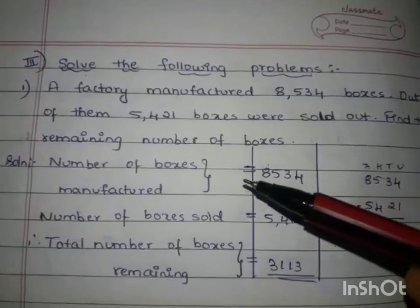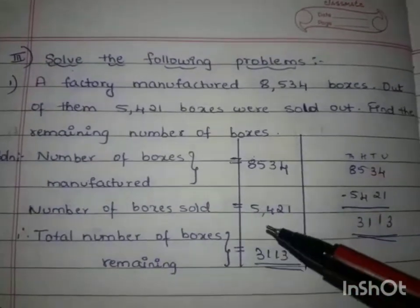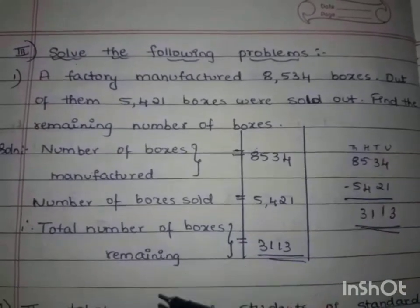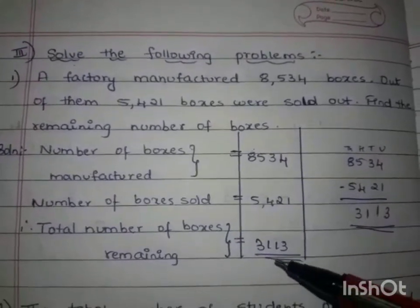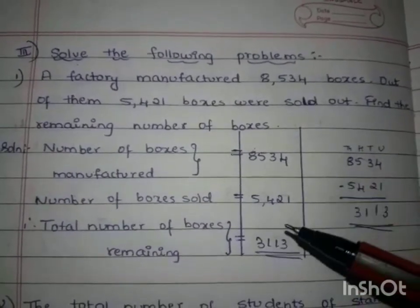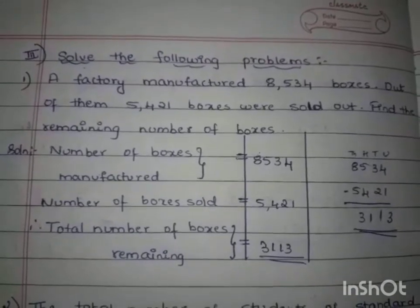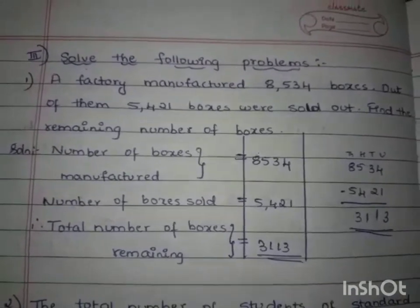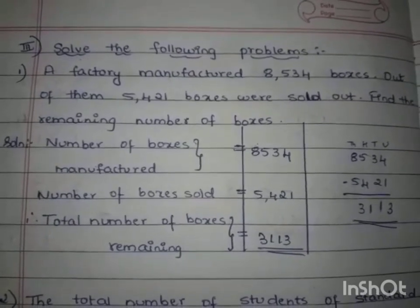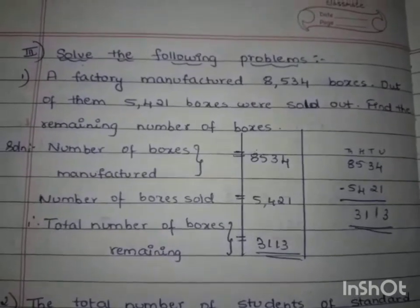The number of boxes manufactured is 8,534. Number of boxes sold is 5,421. The total number of boxes remaining is 3,113. We subtracted the given two numbers. When they ask 'find the remaining number of boxes,' we have to subtract. They may also ask 'find the difference' — even then you have to subtract the two given numbers.